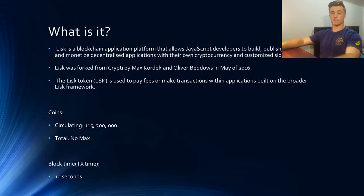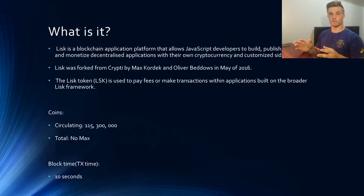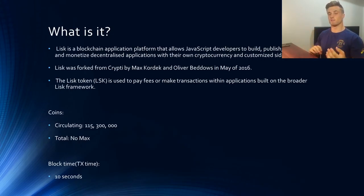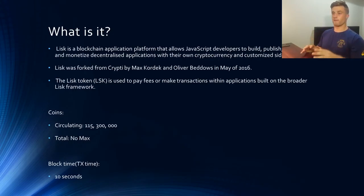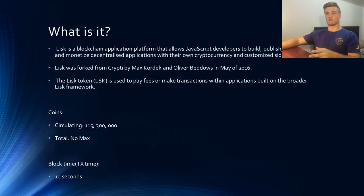So what is Lisk? Well, Lisk is a blockchain application platform which allows people to write and code in JavaScript in order to build, develop, monetize and distribute their decentralized applications, or DApps, with their own cryptocurrencies and their own customized sidechains — keep sidechains in mind as it's going to be a big talking point later on. Lisk was formed from a previous project called Crypti by Max Kordek and Oliver Bedos in May of 2016. The Lisk token, which has the ticker LSK, is used to pay fees and make transactions within applications built on the broader Lisk network.